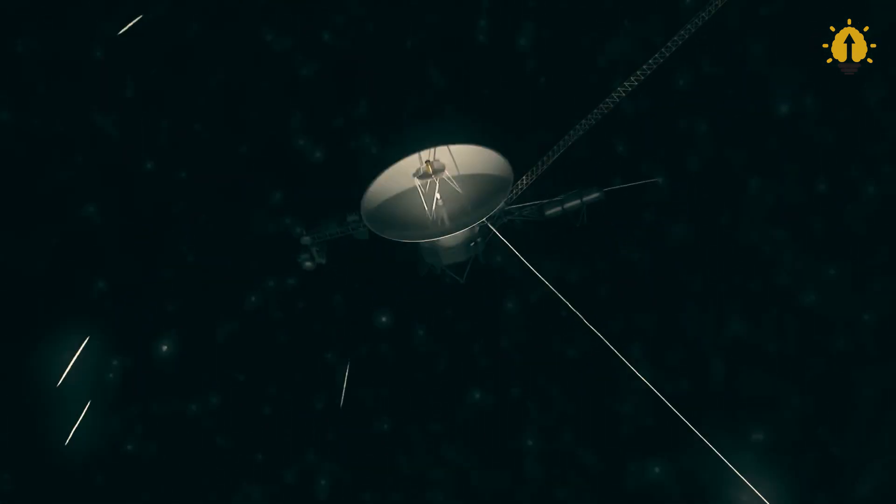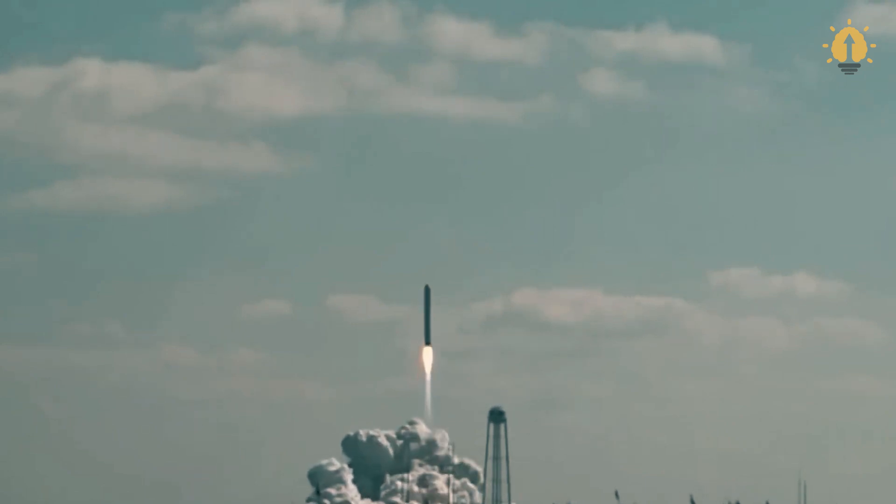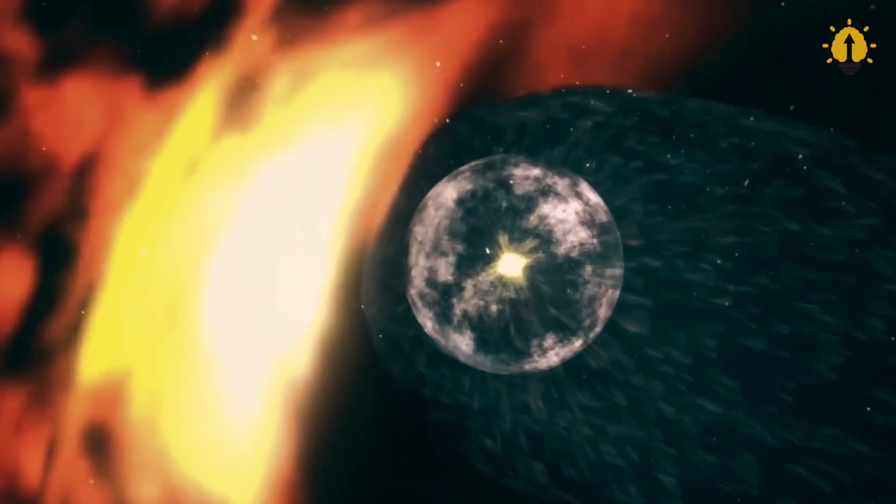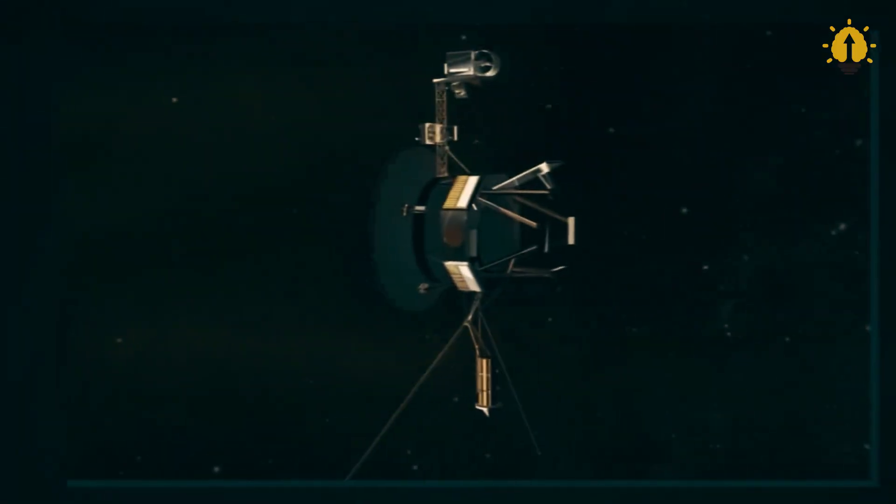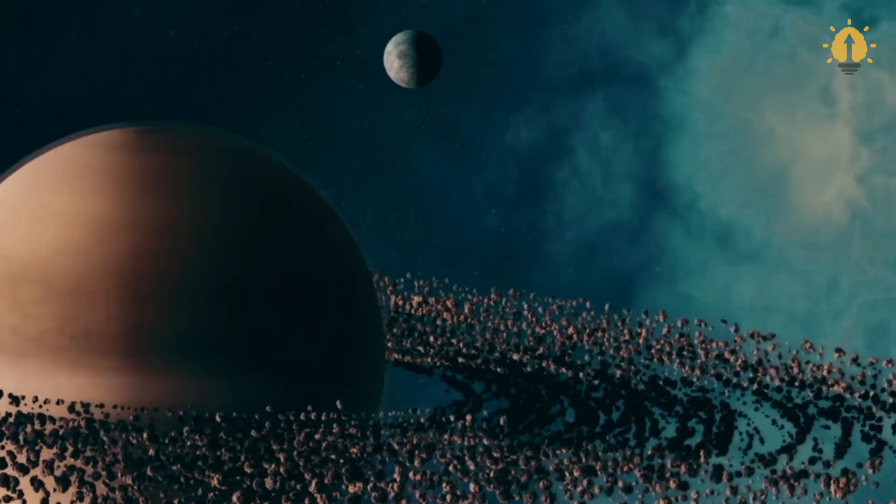Special planetary alignment, gravitational assists, etc. Isn't it incredible that even taking advantage of all the resources available to humanity, it takes us almost three decades to reach the last planet in the solar system?